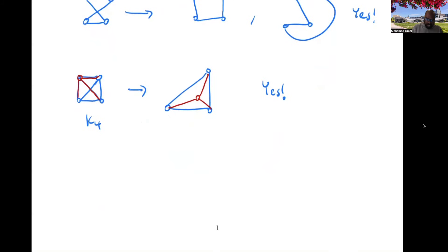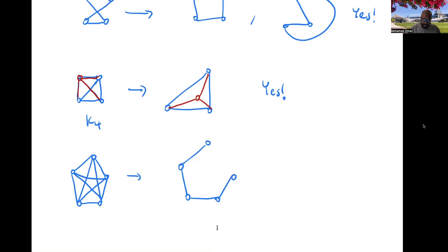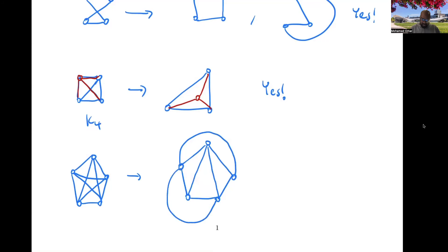What about K5, the complete graph on five vertices? Let's make an attempt. Draw the outer five-cycle, then add edges. When we try to draw additional edges, we might put some outside, but then we feel like we're blocked. We try different strategies and keep finding we get stuck — maybe a different approach, but then we're blocked again.